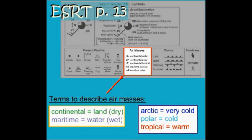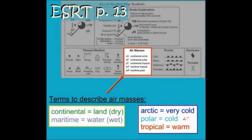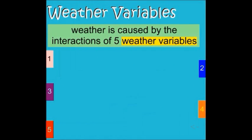You'll also notice there's a capital letter. Capital A stands for Arctic, meaning the temperature of the air mass is very cold. A capital P means polar, meaning the temperature is cold. And a capital T means the air mass formed in a tropical region and is going to be a warm air mass. Weather is caused by the interactions of five weather variables.